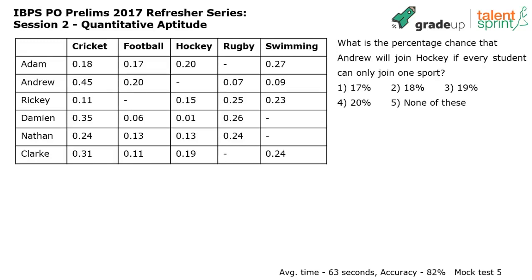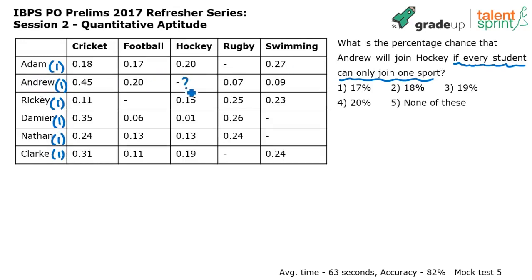The condition that every student can join only one sport means the total probability for each student is one. The probability of Andrew joining hockey is missing, so: 45 + 20 = 65, plus 7 = 72, plus 9 = 81, and 100 minus 81 = 19. So the answer is 0.19, which is 19 percent — option 3.